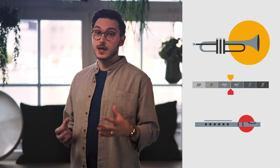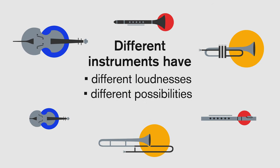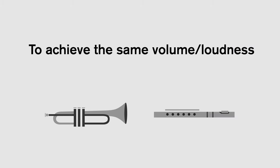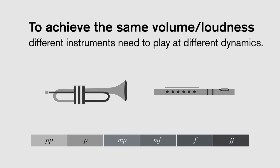Take for example a trumpet and a flute. In the real world, a trumpet is always louder than a flute playing at the same dynamic. All different instruments have different loudnesses and different possibilities and limits. To achieve the same volume, the instruments play different dynamics to each other: the trumpet plays a softer dynamic while the flute plays louder in order to achieve the same loudness.